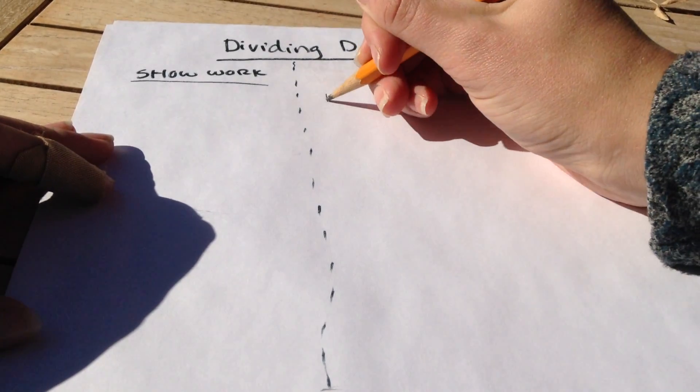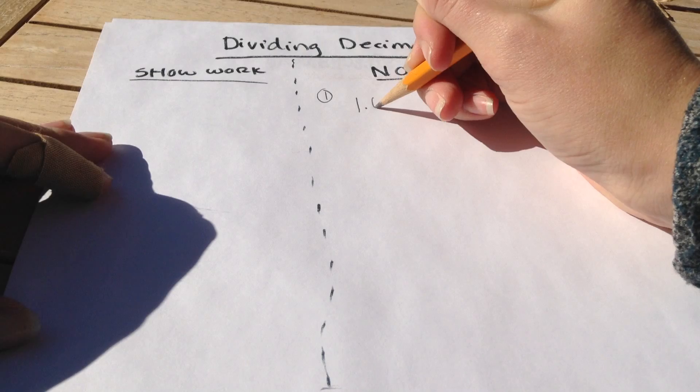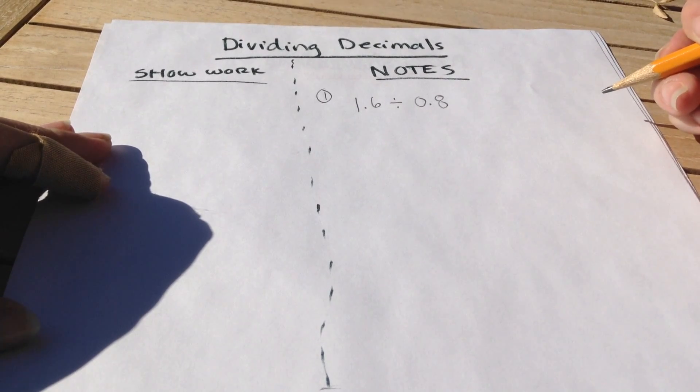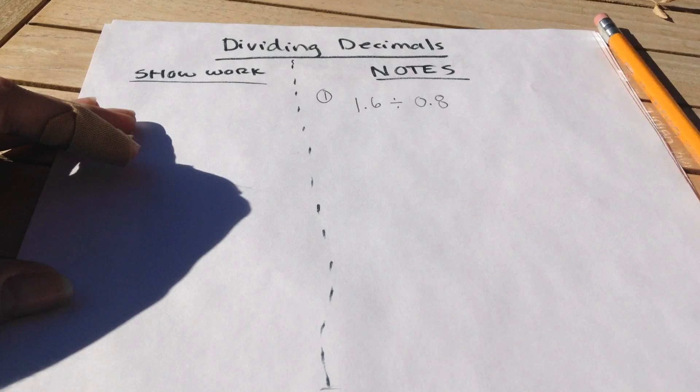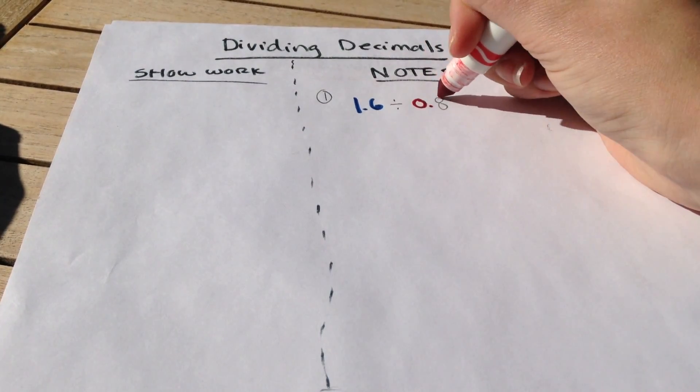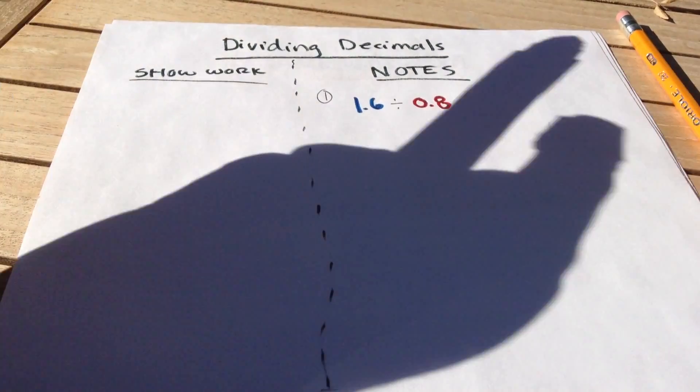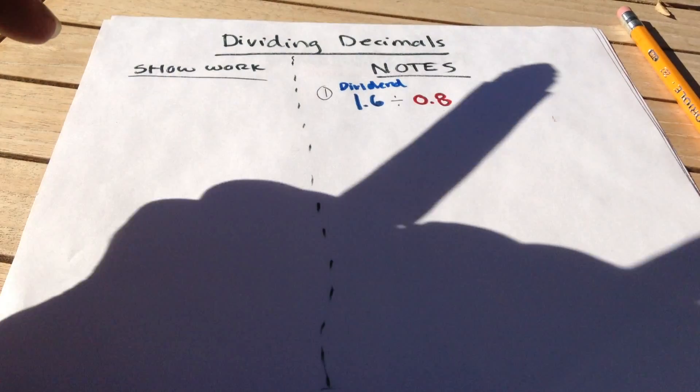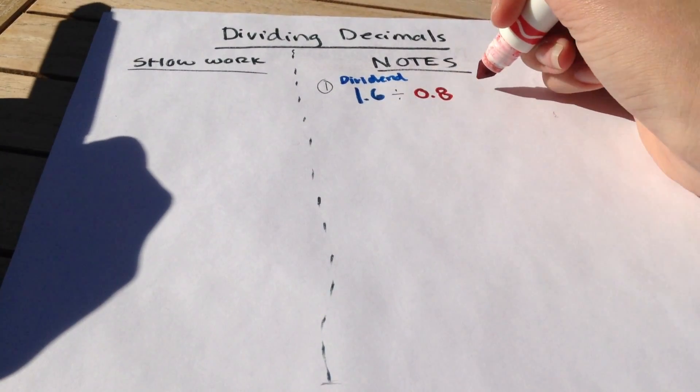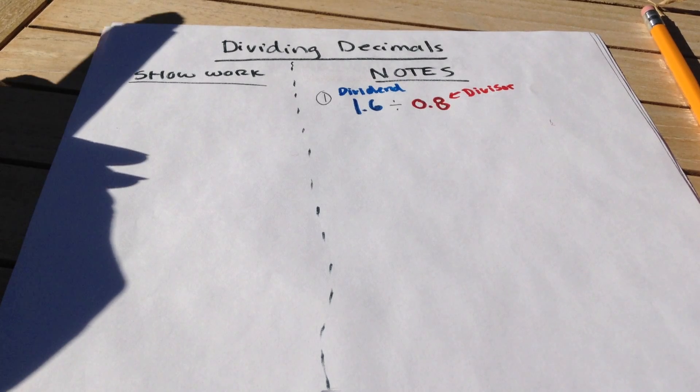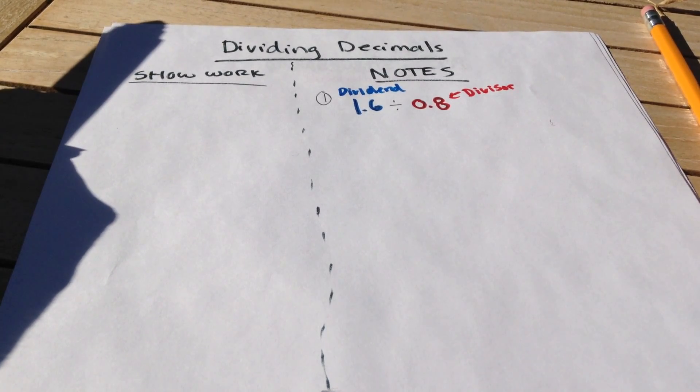So let's first talk about our first example. We're going to divide one whole and six tenths divided by eight tenths. When looking at dividing two decimals, we see that we have one number that's being divided by another number. We call the number that's being divided the dividend, and we call the number that is being divided by the divisor. This is good academic language for you to be able to be comfortable with because we are going to be talking about the dividend and the divisor, especially at the end of the video. Make sure that you write those down.